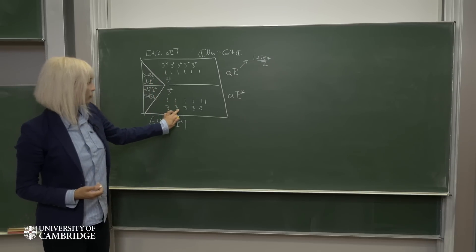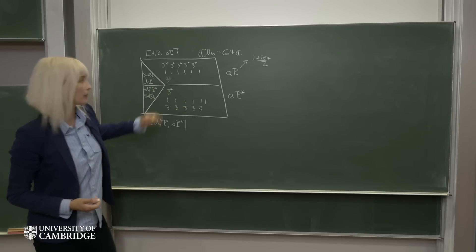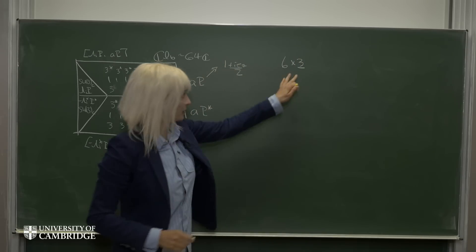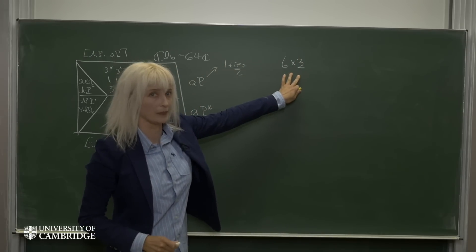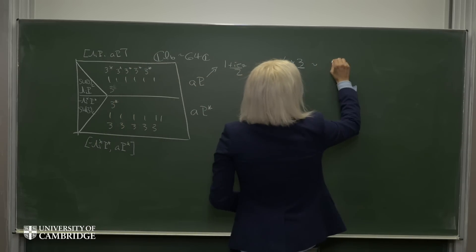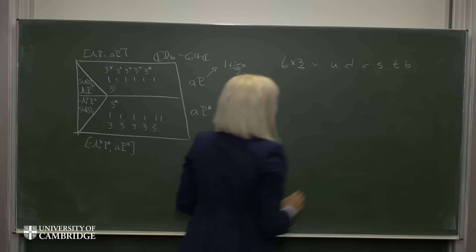So if I add up all the triplets that we have, there's 5 triplets down here and there's 1 triplet up here. So we have 6 triplets under SU3. Those are the SU3 representations we would expect for the up, down, charm, strange, top and bottom quarks.